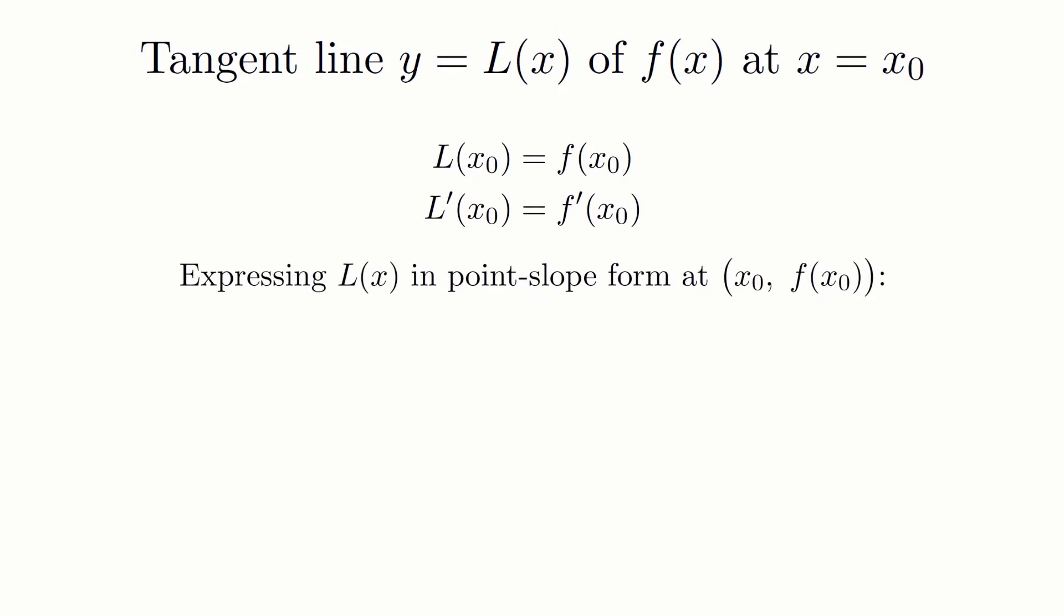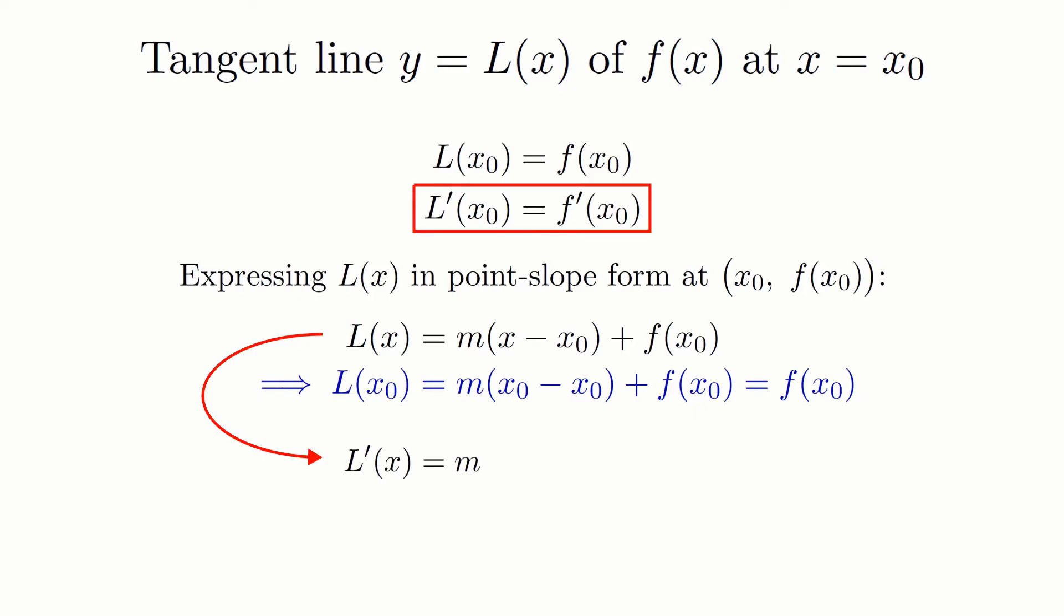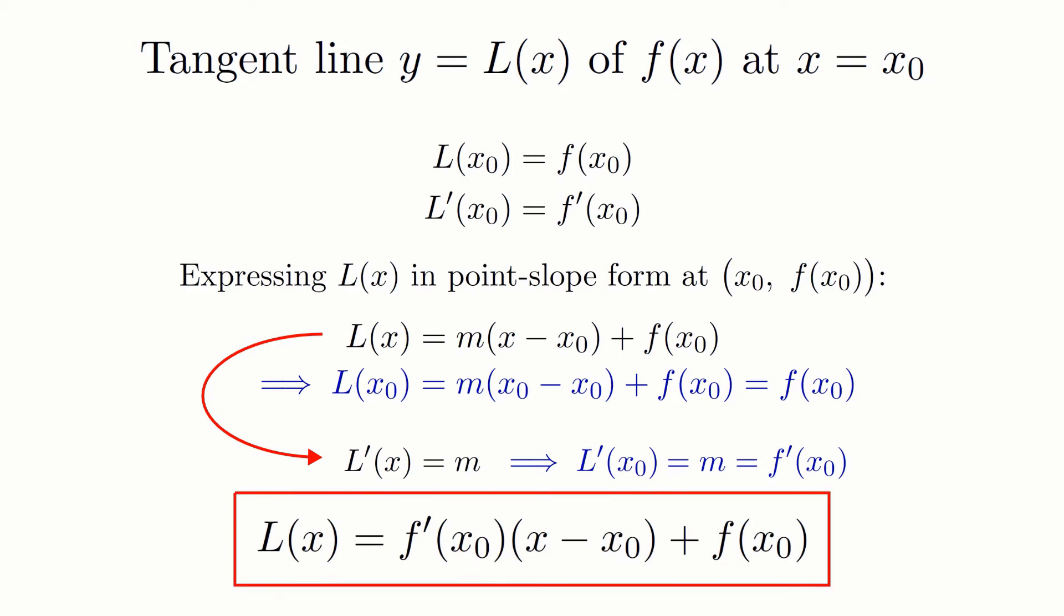That is, L of x0 equals f of x0 and L prime of x0 equals f prime of x0. If we use point-slope form to express L of x at the tangent point x0 comma f of x0, we automatically get the first condition satisfied. And if we take the derivative of our current formula in progress for L of x, we get that it collapses into just M. But remember what our second requirement says: the derivative of L must match the derivative of f at x0. So that means we must have that M is equal to f prime of x0. And this leads us to the general equation for the tangent line: L of x equals f prime of x0 times x minus x0 plus f of x0.